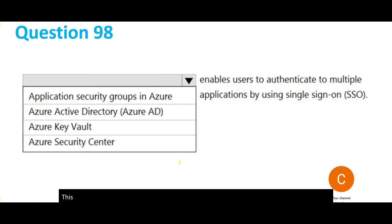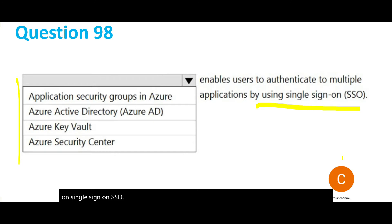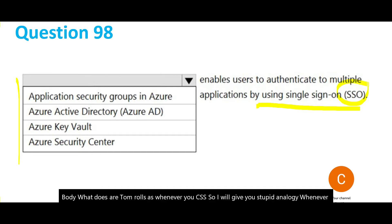Now this question has four options and asks: what do you need to enable users to authenticate to multiple applications using Single Sign-On (SSO)? Here is my thumb rule: whenever you see SSO, blindly select Active Directory and move to the next answer. I'll still explain why the remaining three options are wrong. Security Center, as explained, is now called Microsoft Defender for Cloud — so that is wrong.